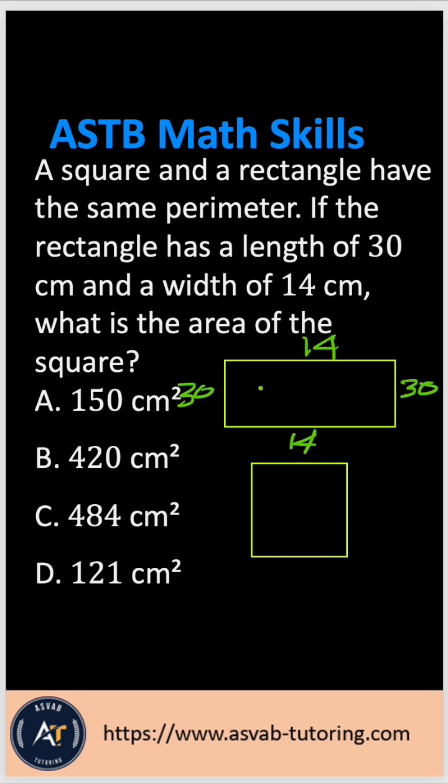This side is also 14, so the perimeter means adding all the sides. That gives you 30 plus 30 equals 60, 14 plus 14 is 28, so that gives you a total of 88 centimeters.